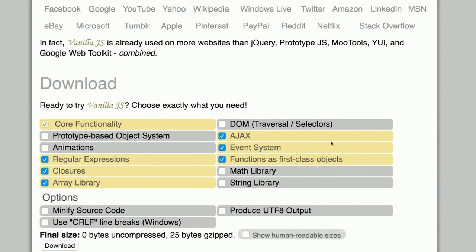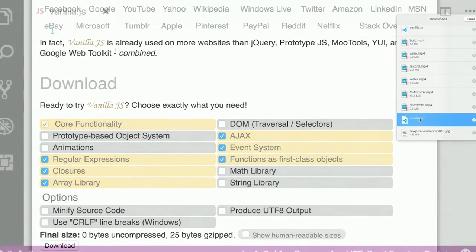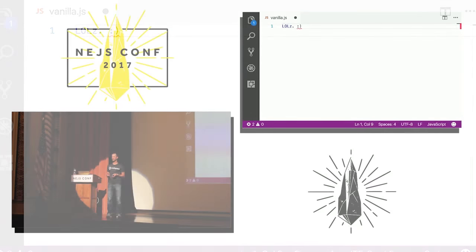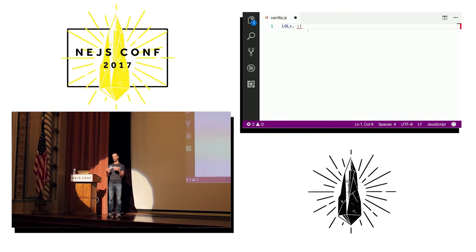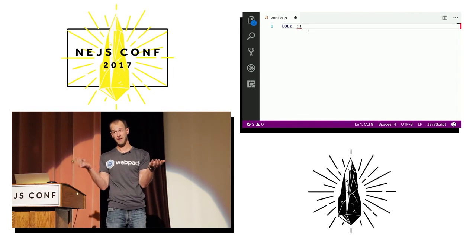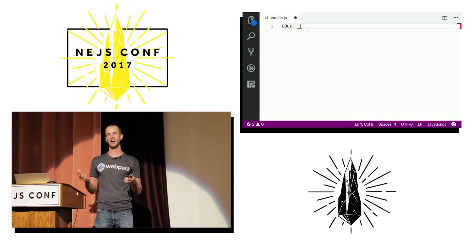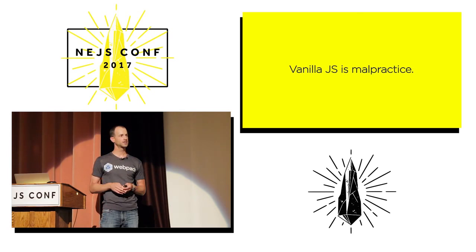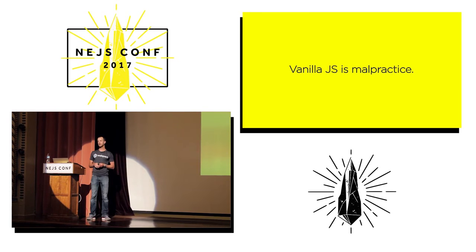When you opened that vanilla.js download in your editor, what you'd see was an empty file. The punch line is: vanilla.js is just using the platform. The site contrasted performance of plain vanilla JS versus jQuery or MooTools, and it was not surprisingly faster because it removed a layer of abstraction. This was funny at the time, but I believe vanilla.js is malpractice today — because if we're not leveraging each other's work, we are wasting time reinventing the wheel. We should be standing on the shoulders of giants.